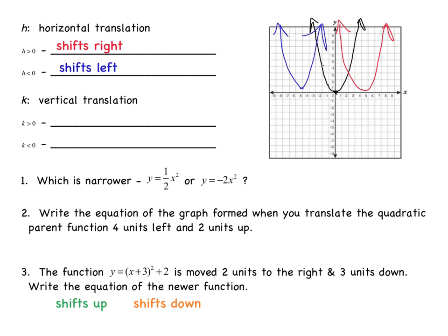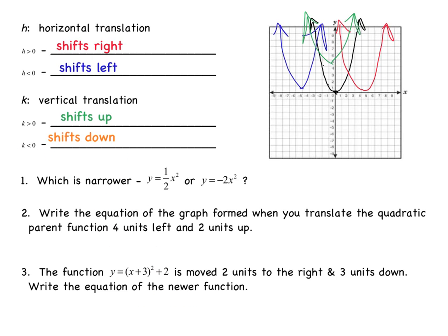Now let's look at the k value, which represents a vertical translation — it will shift your parabola either up or down. If the k value is greater than 0, it will shift the parabola up, and it will look something like this. If you notice, it has shifted the vertex from 0, 0 upward. If the k value is less than 0, it will shift your parabola down, and that will look something like this.